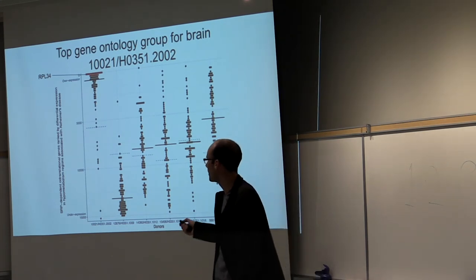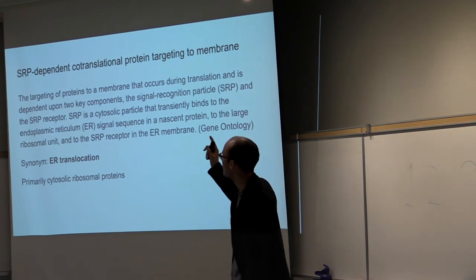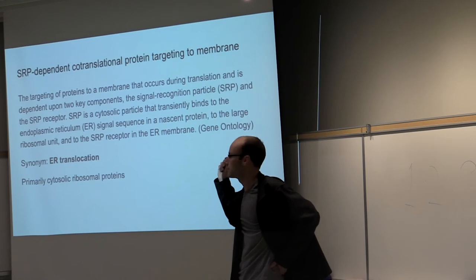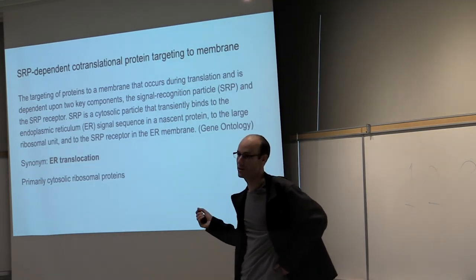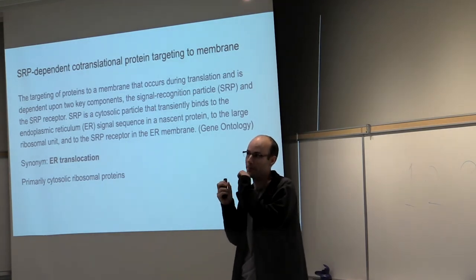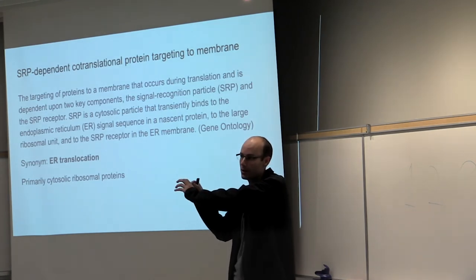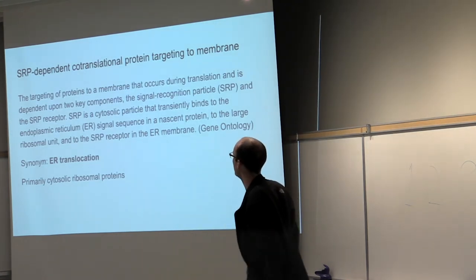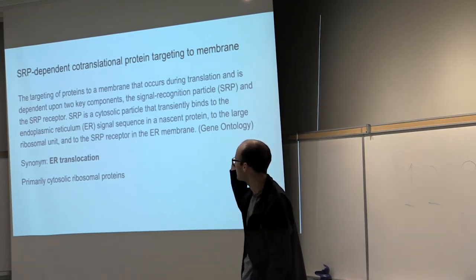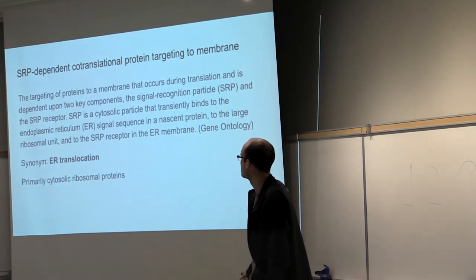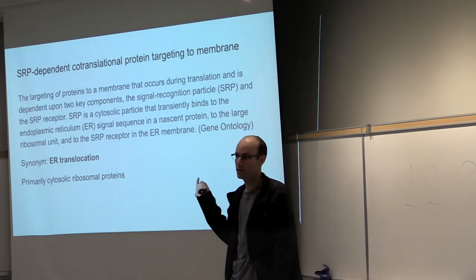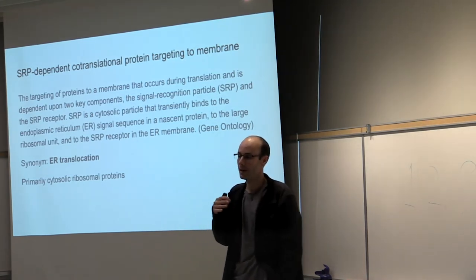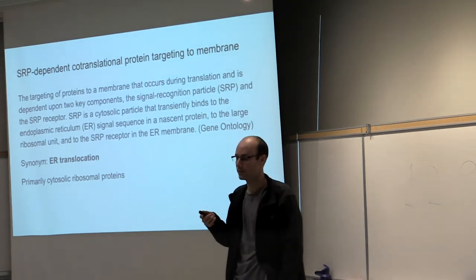The GO group is SRP-dependent co-translational protein targeting to the membrane — also called ER translocation. A signal recognition particle brings the ribosome to the endoplasmic reticulum, and whenever that ribosome is translating, it translates into the ER. The SRP particle connects with the receptor and binds to the ER. Looking inside this gene ontology group, it's mostly cytosolic ribosomal proteins — not mitochondrial ribosome proteins, but cytosolic ribosomal proteins.